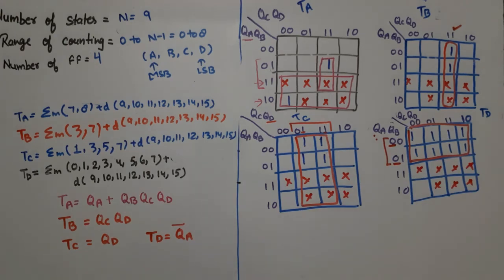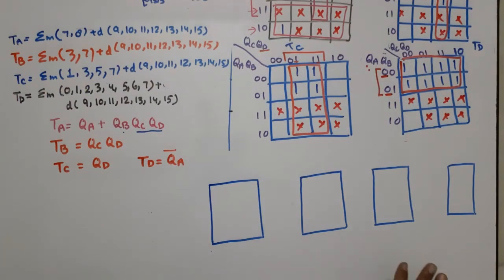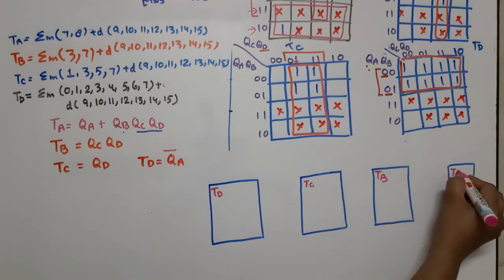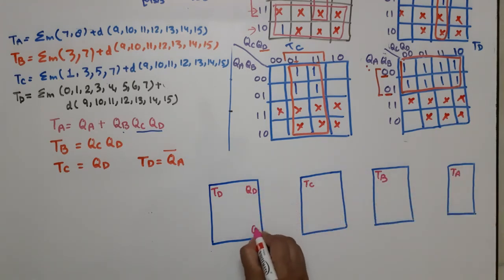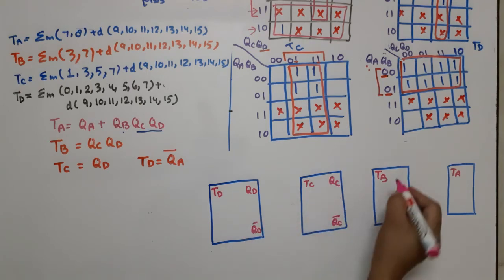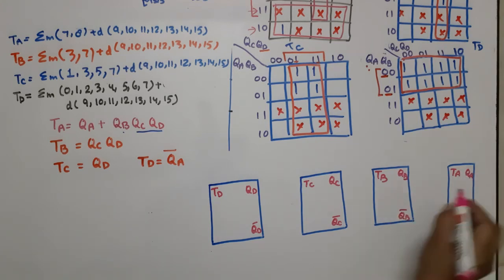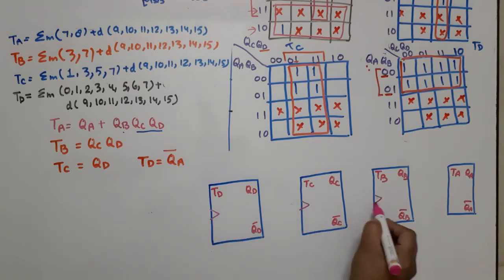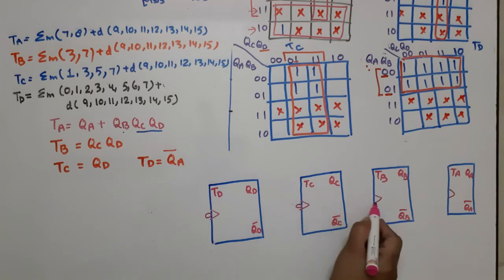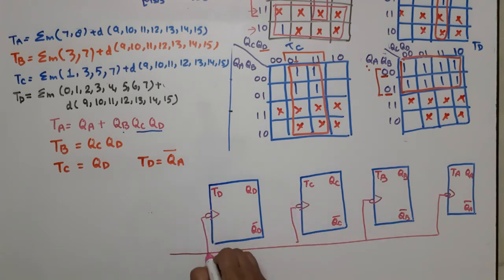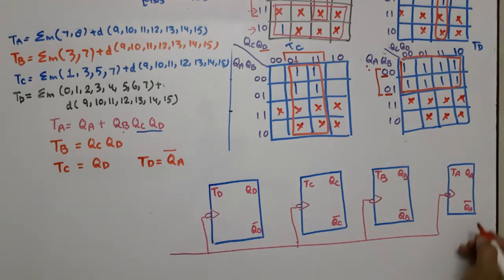We now have 4 equations: TA = QA + QB·QC·QD, TB = QC·QD, TC = QD, TD = QA_bar. We will now draw the circuit diagram using 4 flip-flops. This is the LSB side. TD is the LSB input; TC is next, then TB, then TA. Each flip-flop has Q and Q_bar outputs. For a synchronous counter, the clock is applied to all flip-flops simultaneously.